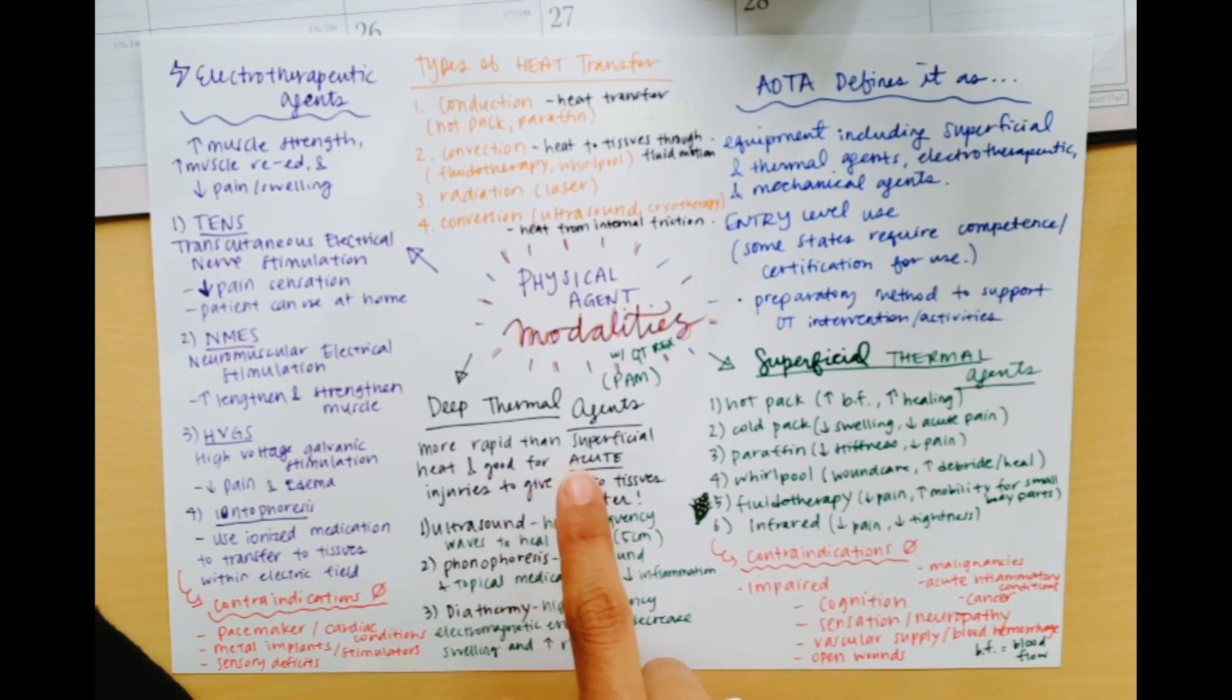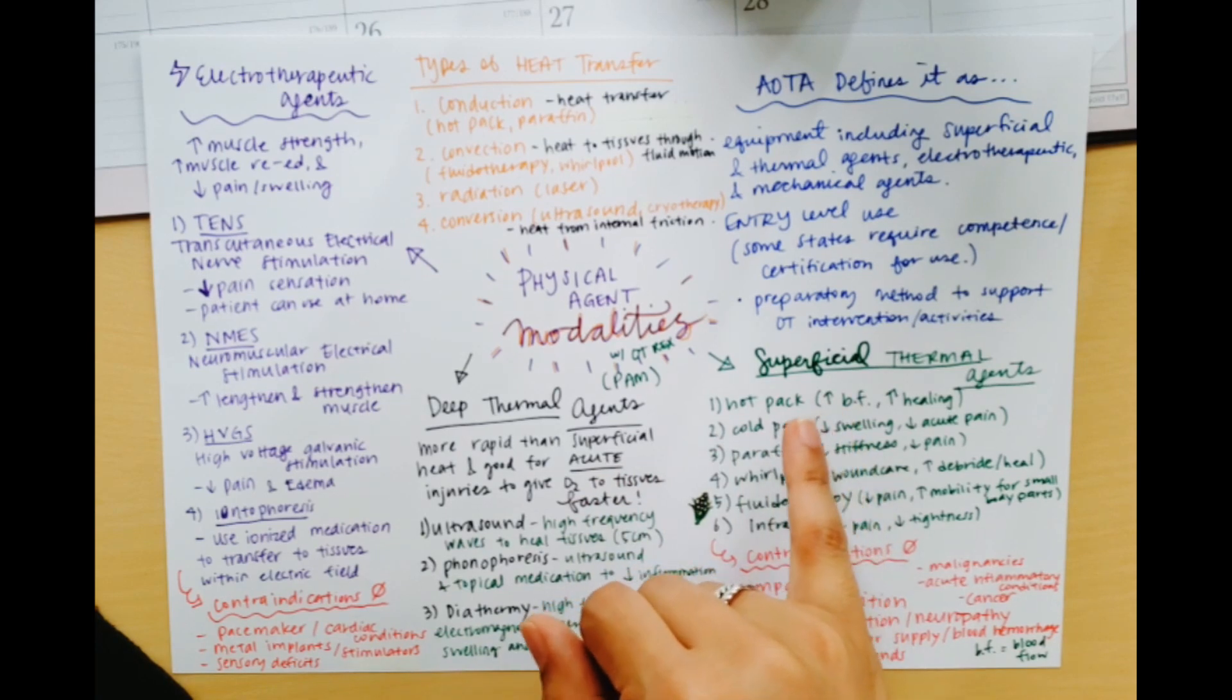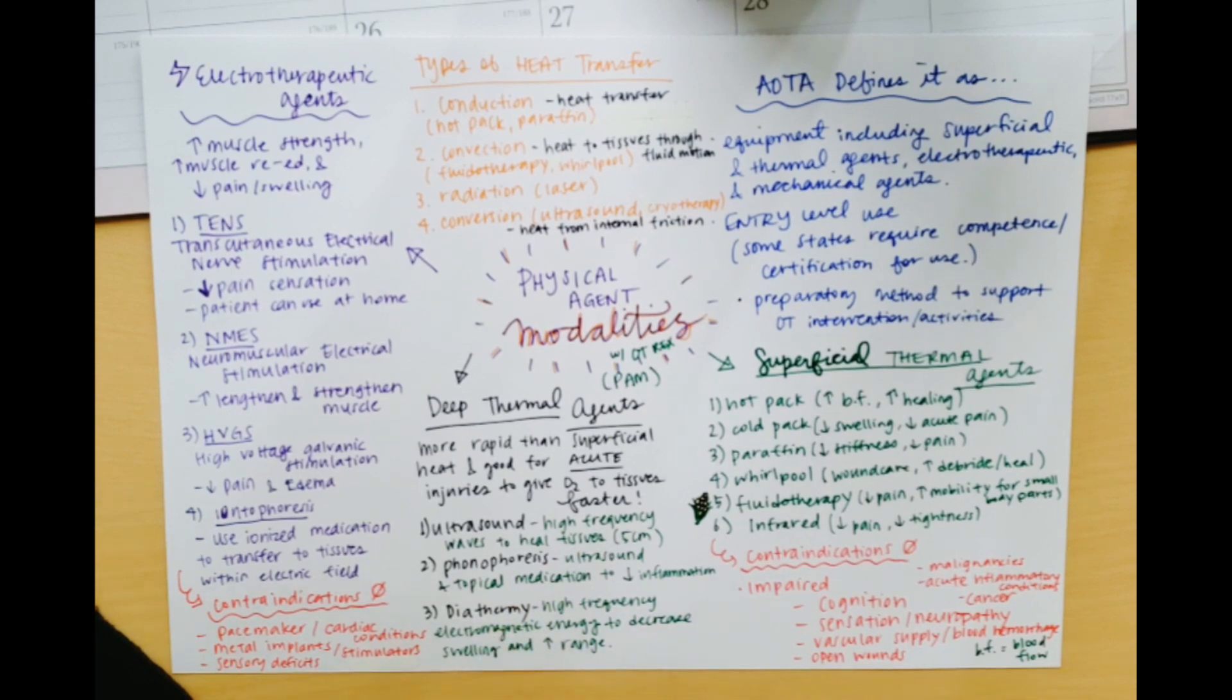Moving on to deep thermal agents. So now we are moving from the superficial to the deep, which means that it's going to have a more rapid effect than the superficial because the heat is going much deeper. So it's good for acute injuries and it gives more oxygen to the tissues at a faster rate. So I have three examples here. I am most familiar with ultrasound and phonophoresis. Ultrasound was used very frequently when I was in the hand setting and they use high frequency waves to heal tissues. And you just kind of go in a circular pattern with ultrasound machine. It goes deep as like five centimeters and they have different settings and that can really help heal the tissues.